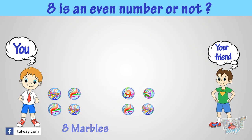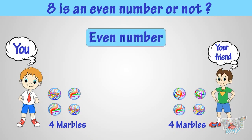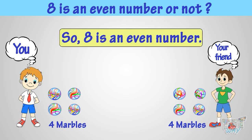You can give 4 to your friend and keep 4 with you. Any number of things that you can equally share between two are even numbers of things. So 8 is an even number as we can share 8 things equally.